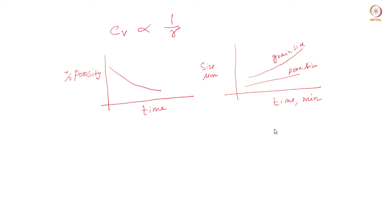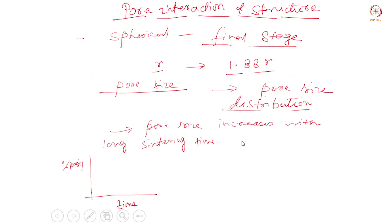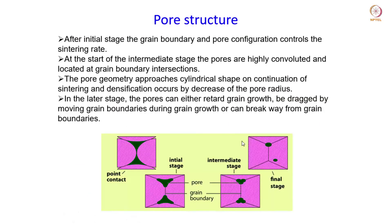Once the pores have taken this kind of closed pore geometry as we have seen in the final stage of sintering, the further densification will now depend on the structure of the pores and how they interact with the grain boundaries. As I said, after the initial stage, the grain boundary and the pore configuration will control the sintering rate.